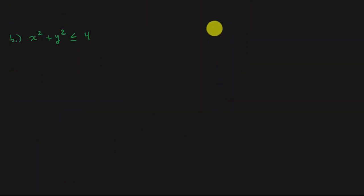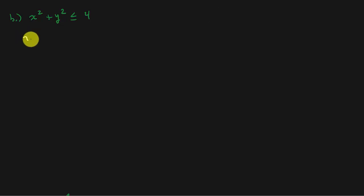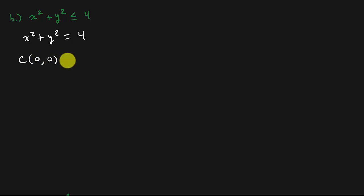Now another type: do you remember what x squared plus y squared equals 4 is? That's a circle. We have x squared plus y squared equals 4, so the center is (0, 0) and the radius is the square root of 4, which is 2.